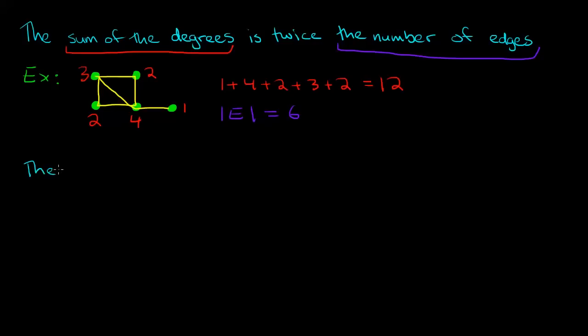In any graph G, the sum of the degrees of the vertices over all of the vertices in the vertex set is equal to 2 times the number of edges.